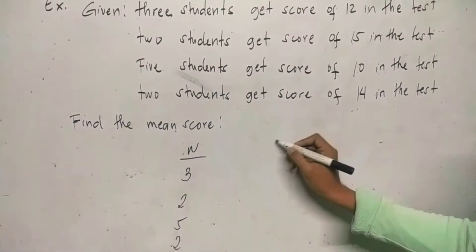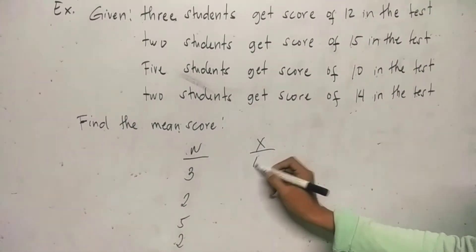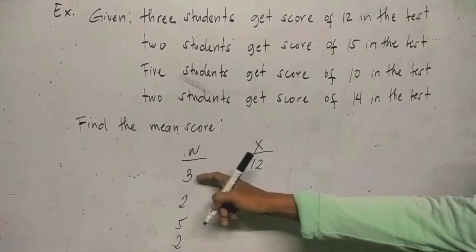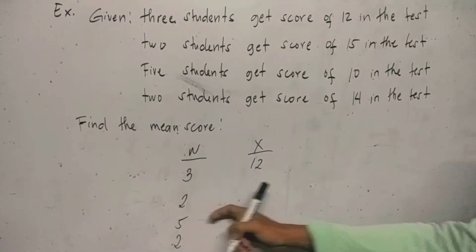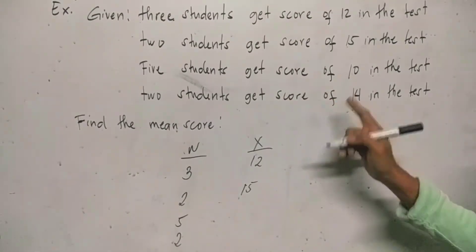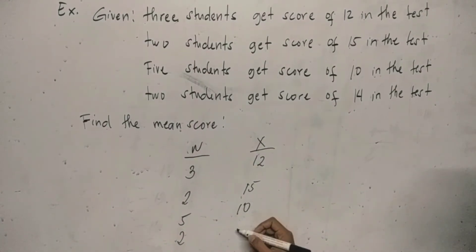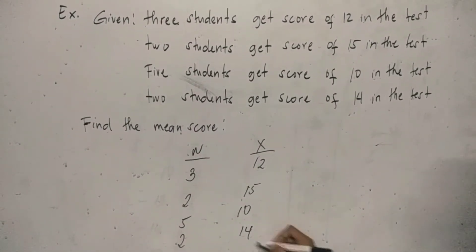Then the x, or the values or the raw score, we have 12. Corresponding to 3 students is 12. 2 students got 15 in the test. 5 students got 10. And then another 2 students got 14.